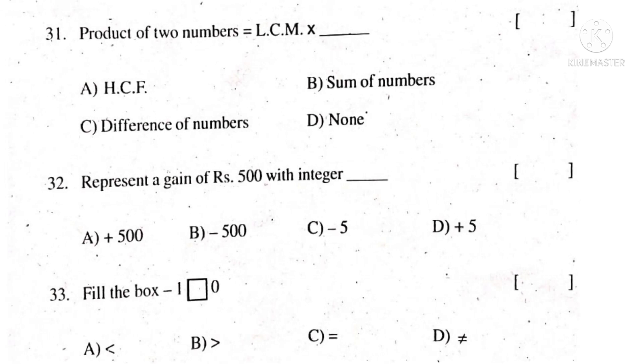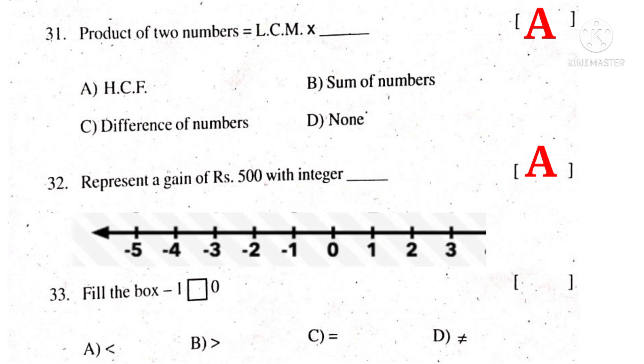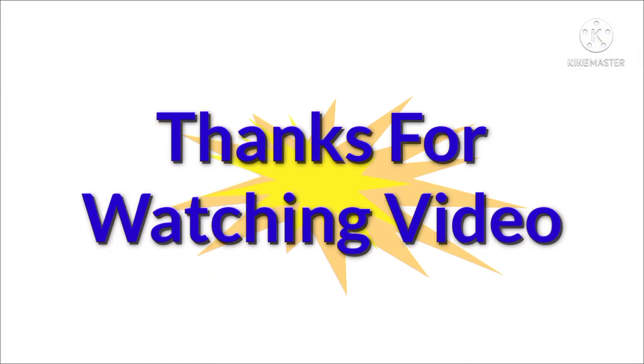31st bit: product of two numbers is equal to LCM into dash - HCF. The correct choice is A. Represent a gain of Rs. 500 with integer. Observe the word gain, it indicates plus, so plus 500. The correct choice is A. Fill the box: minus 1 dash 0. Observe that minus 1 is on the left side of 0, so put less than symbol. The correct choice is A.